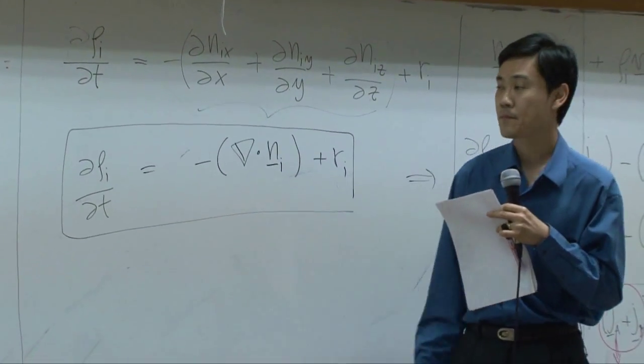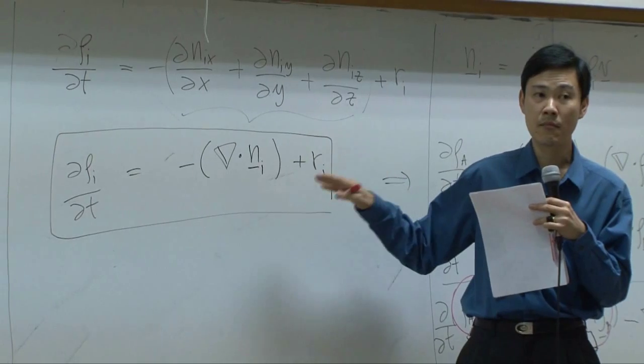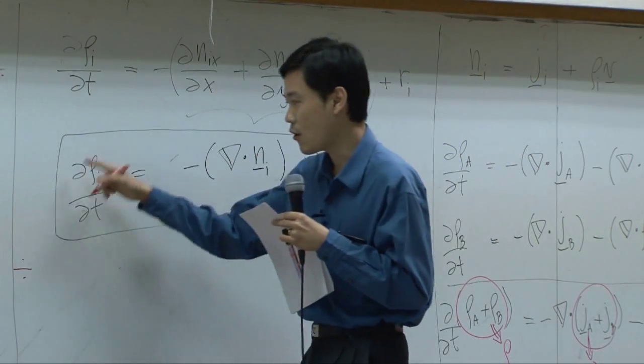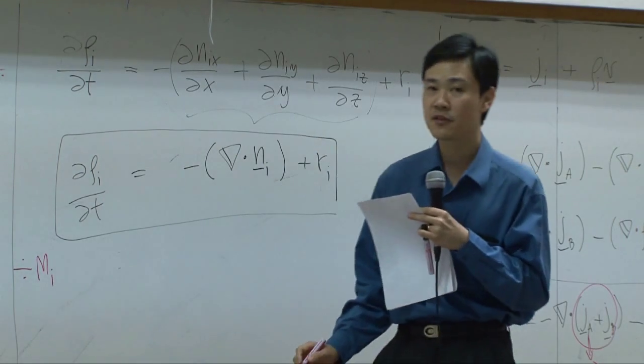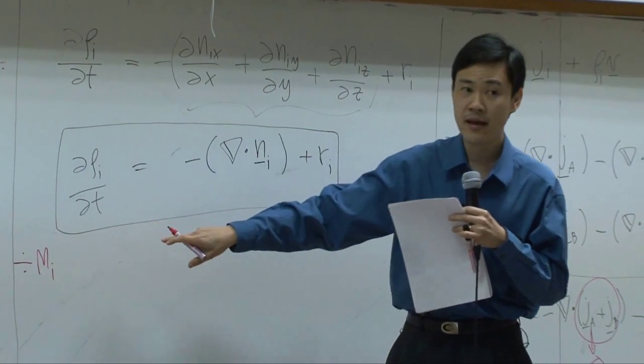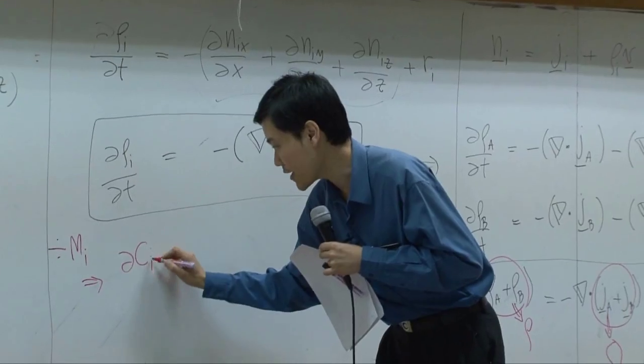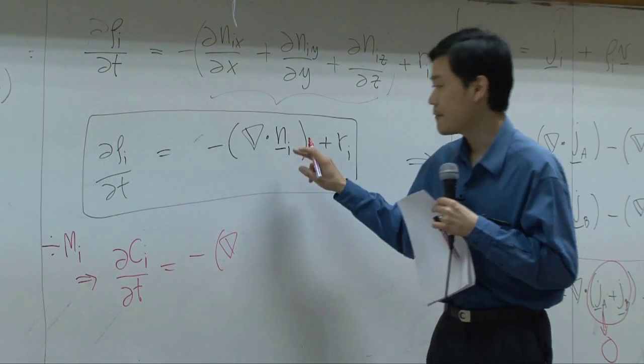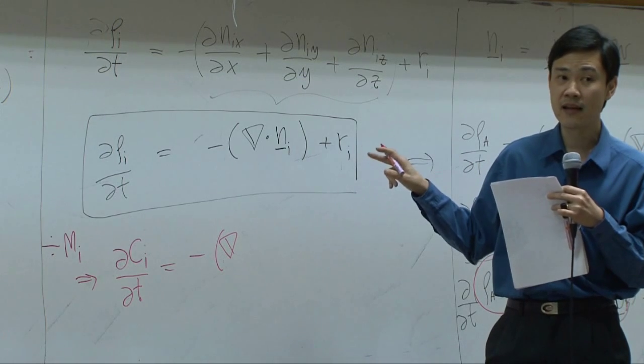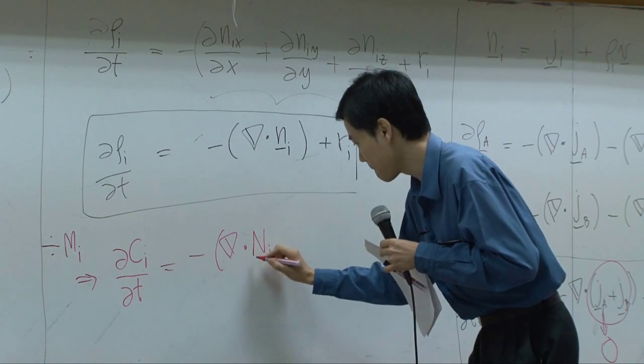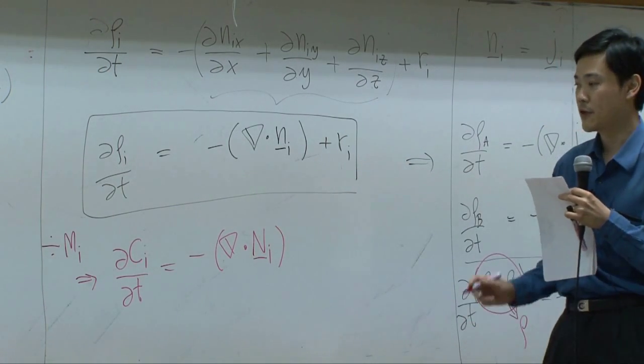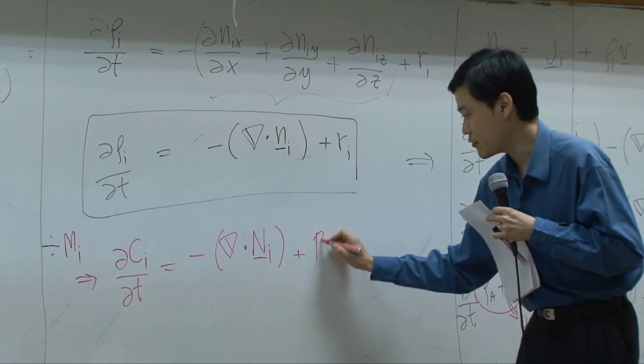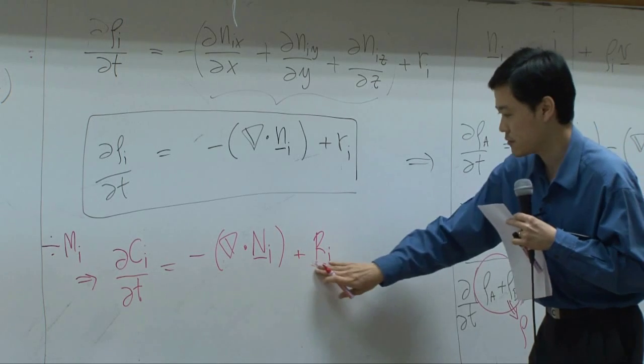All right? This equation was derived based on mass unit. So if I divide the whole equation here by molecular mass of specie I, the density divided by molecular mass should give you molar density with respect to time. Now, this part, mass flux of specie I divided by its molecular mass should give you molar flux. And production rate, you can divide them by molecular mass and convert it into molar production rate.